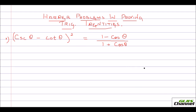Hi, Basavi here. Let's work out a few harder problems in proving trigonometric identities today. Here is your first question: (cosecant theta minus cot theta) whole squared equals (1 minus cos theta) over (1 plus cos theta). This is what we need to prove.